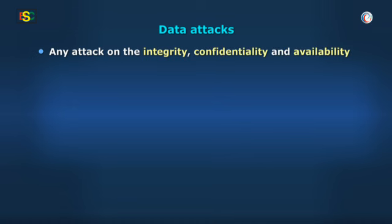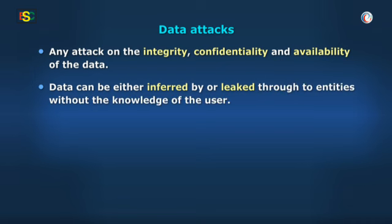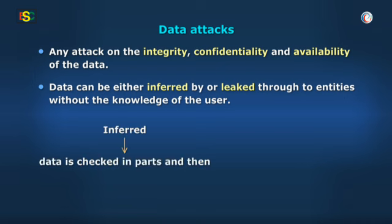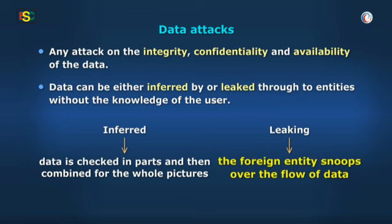confidentiality, and availability of the data. The data can be either inferred or leaked through foreign entities without the knowledge of the user. By inference, we mean the data is seen by the foreign entity piece by piece and put together to create a whole picture. In leaking, the foreign entity gets access to data flow through eavesdropping or backdoor entry.